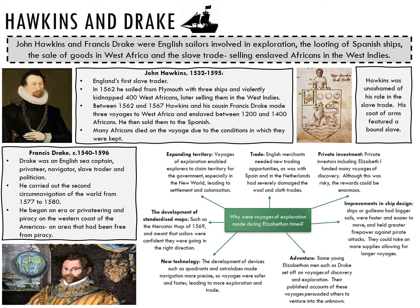There had also been improvements in ship design. Ships or galleons had bigger sails, were faster, easier to move, and had greater firepower against attack by pirates. They were also more stable and could take on more supplies, encouraging longer voyages and exploration. Some young Elizabethan men, such as Francis Drake, set off on voyages of discovery for adventure. Their published accounts of these voyages, though often inaccurate, persuaded others to venture into the unknown in the belief that fortunes could be made.